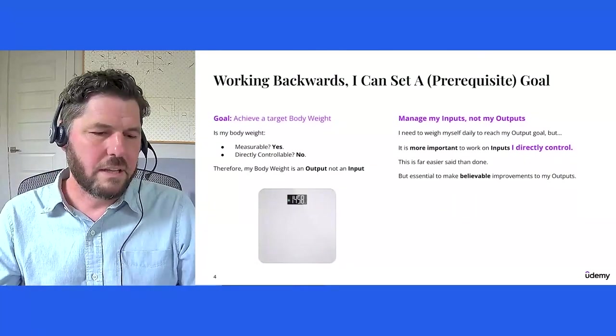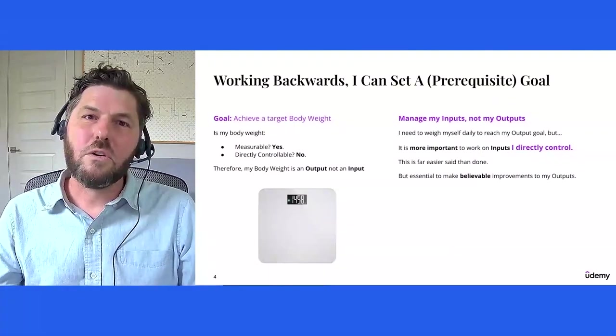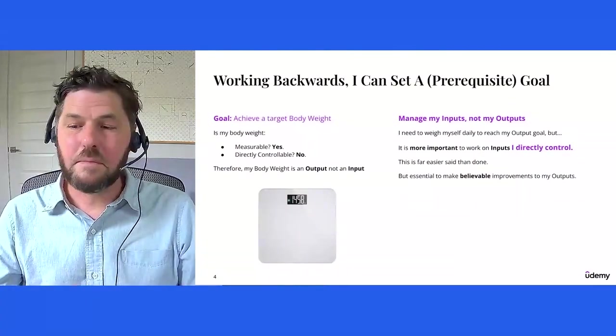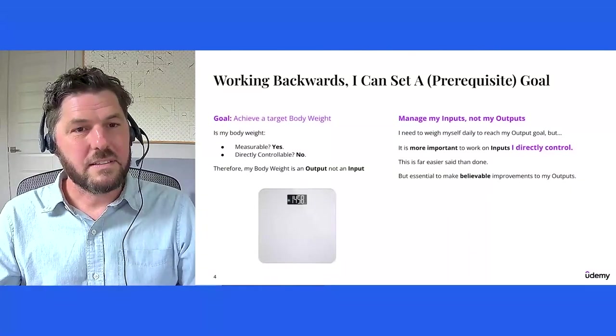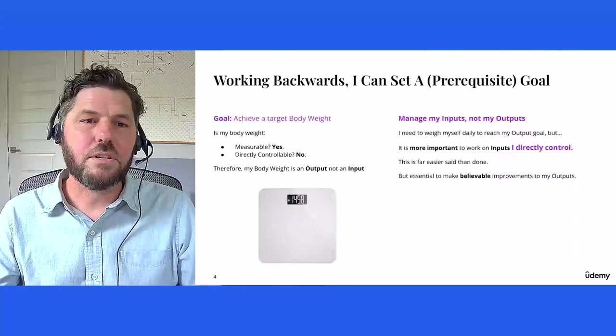So I can ask myself, is my body weight measurable? Yes. Is it directly controllable? No. And this means my body weight is an output. It's not an input that I directly control. In everything that we do, whether it's our personal lives, the goals we set for ourselves with our friends and family, goals with our team and goals at our companies, we need to focus on managing our inputs, not our outputs.